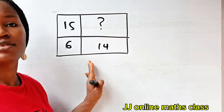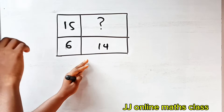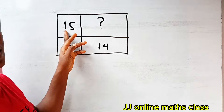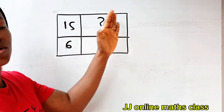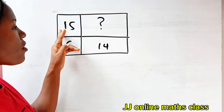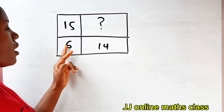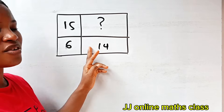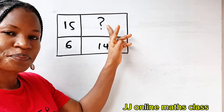This is an interesting math question under geometry. We are told that this is not drawn to scale. The area of this portion is 15, the area of this portion is 6, and the area of this portion is 14. The question asks: what is the area of this portion?